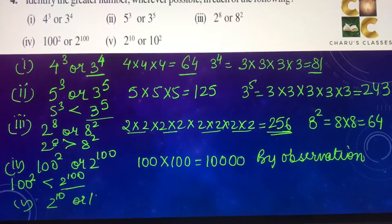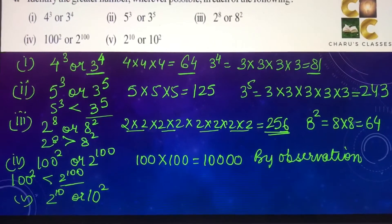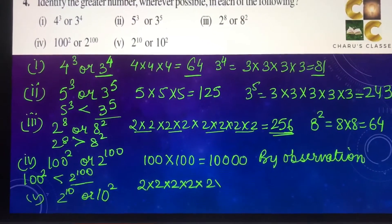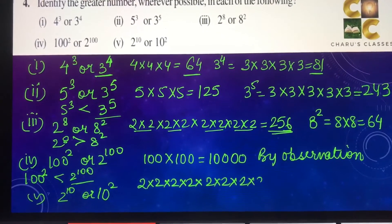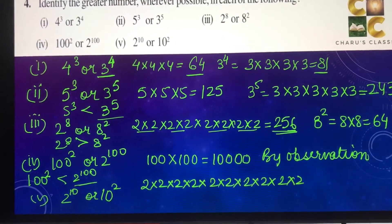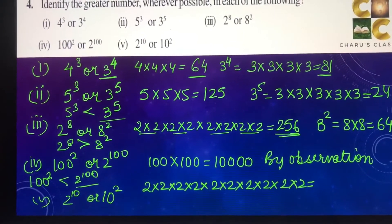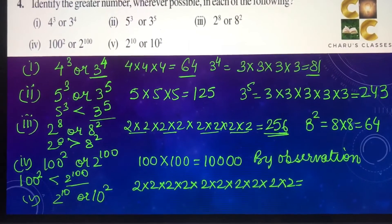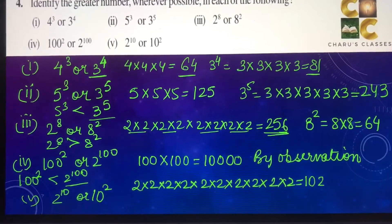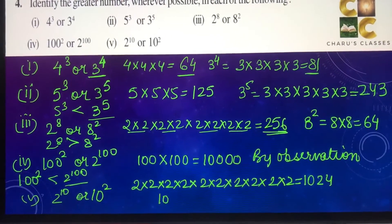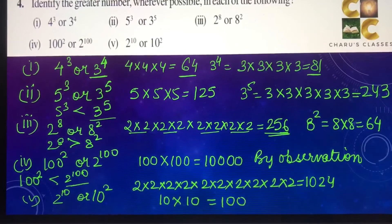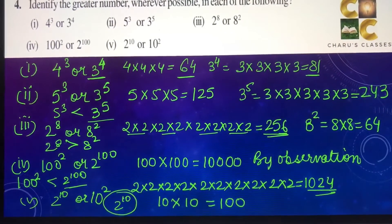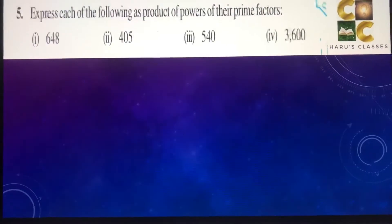Fifth part: 2 to the power 10 or 10 to the power 2. 2 to the power 10 is 2 multiplied 10 times, which comes out as 1024. And 10 to the power 2 is 10 into 10, that is 100. So definitely 2 to the power 10 is the greater number.